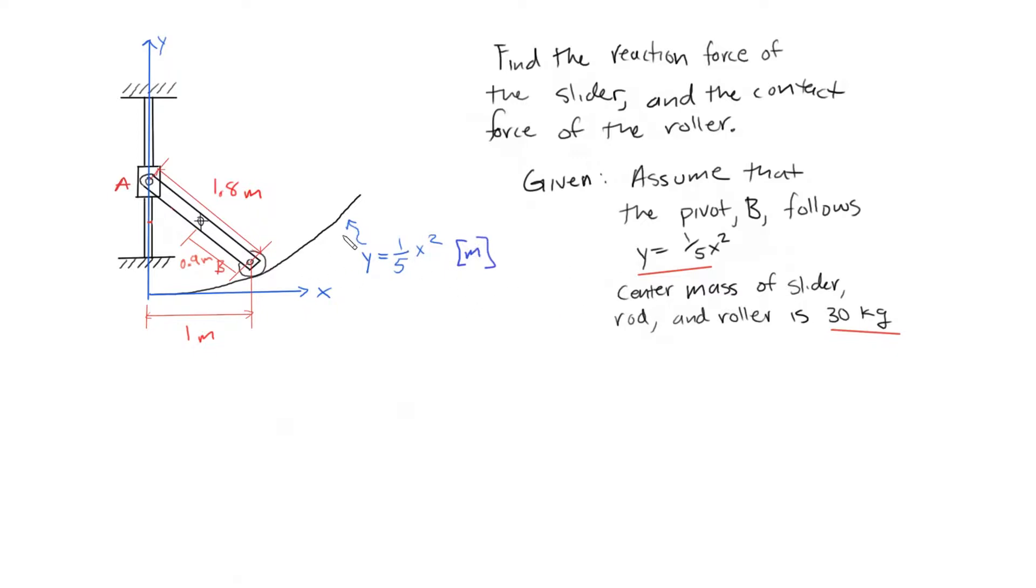As we did before, our goal is trying to find reaction forces, so the reaction force on the slider which is A and the reaction force of the roller which is B. We're given where this contact force is occurring by this equation, and it's one meter from the y-axis. We're also given that the center mass of the slider is right here and the mass of the rod, slider, and roller, this whole system, is 30 kilograms.